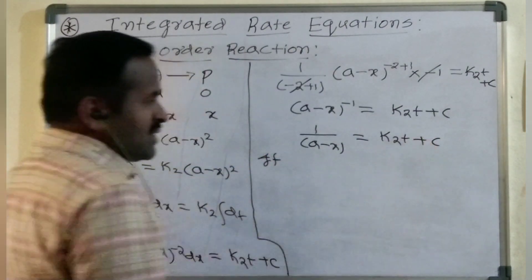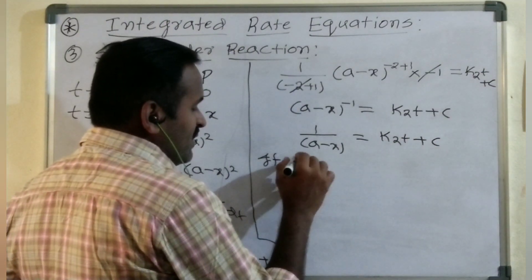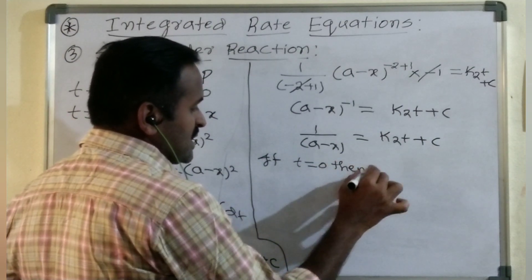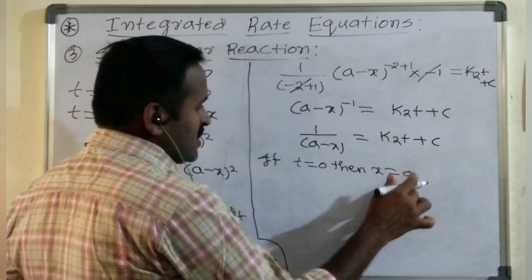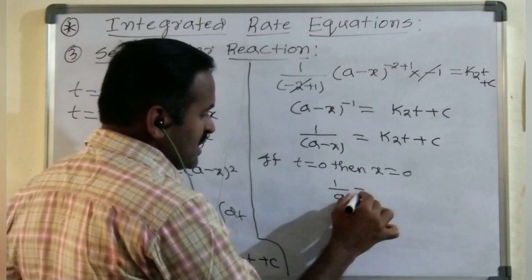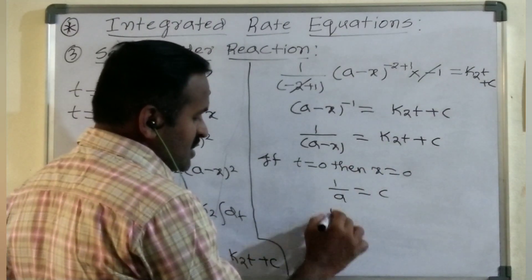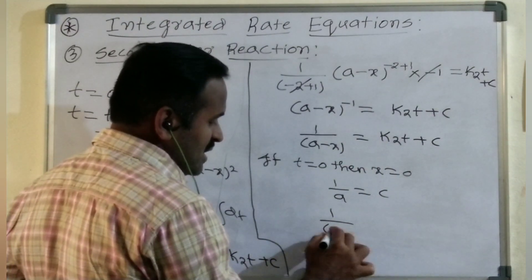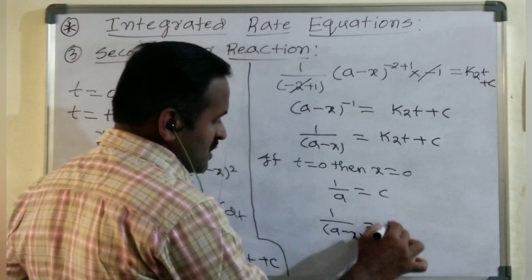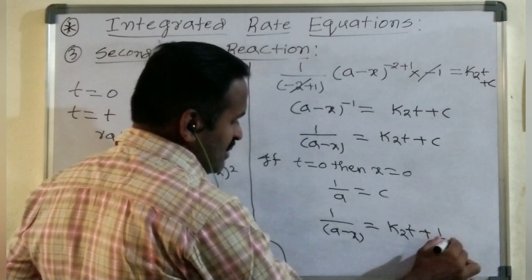To find the integration constant C: when T equals 0, X equals 0. Substituting in the above equation, we get 1/A equals C. Substituting back, we get 1/(A minus X) equals K2·T plus 1/A.